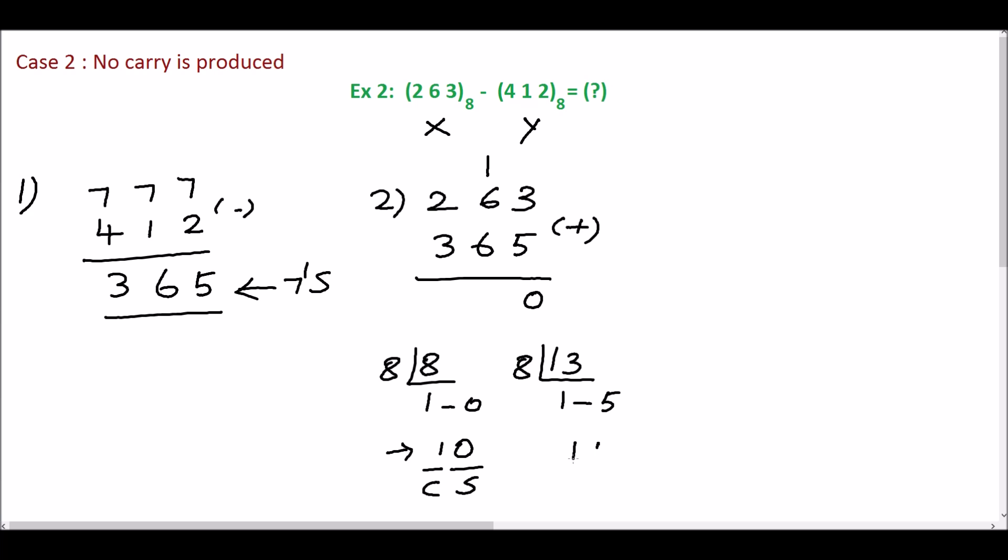We will convert this into octal. The quotient is 1 and the remainder is 5, so 15 is the equivalent octal. 5 is the sum and 1 is the carry. Write 5 here and the carry here. 1 plus 2 plus 3 is 6. In step 2, the carry is not generated.